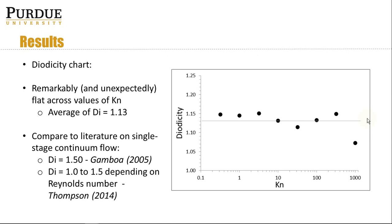When we calculate the diodicity and plot it all up, this is what we get. The graph on the right has diodicity on the y-axis and Knudsen number on the x-axis on a log scale. We're pretty much completely flat — with a little bit of noise — at a diodicity of about 1.13, which compares all right to literature and is in the right range. Gamboa found a diodicity of 1.5, and Thompson found a diodicity of 1 to 1.5 depending on the Reynolds number of the continuum flow. But that's all continuum, so this is new for molecular flow.